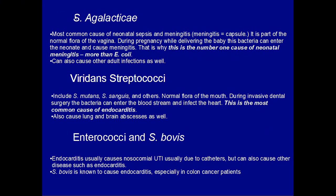The other bacteria that are not as high yield include S. agalactiae. This is somewhat high yield because it is the number one cause of neonatal meningitis. Remember it causes meningitis, so if it causes meningitis it has a capsule. It's part of the normal flora of the vagina, which is why during pregnancy when the mother is delivering, she can contaminate or infect the baby with S. agalactiae, and the baby will develop meningitis — that's why this is the number one cause of neonatal meningitis.